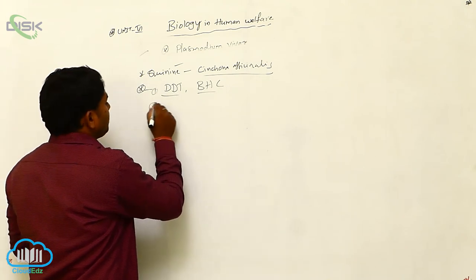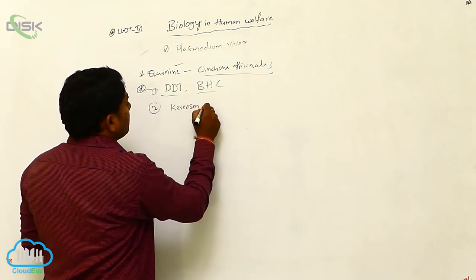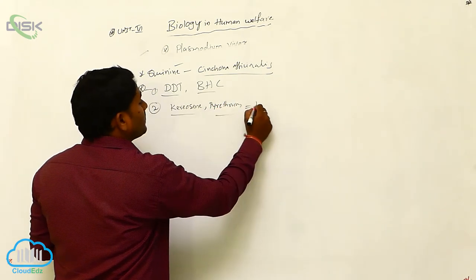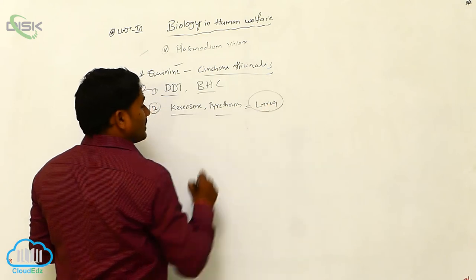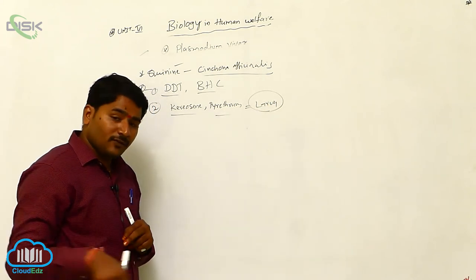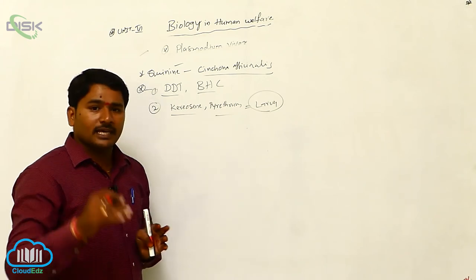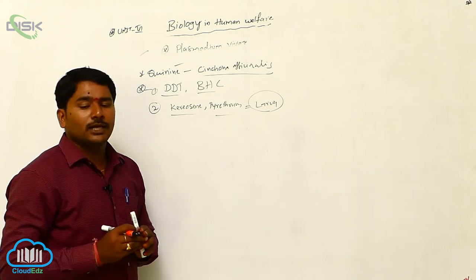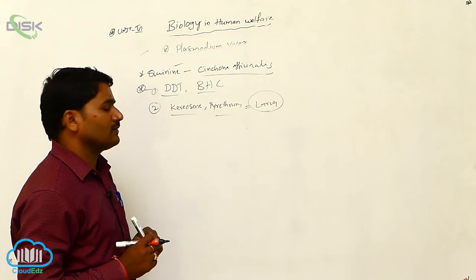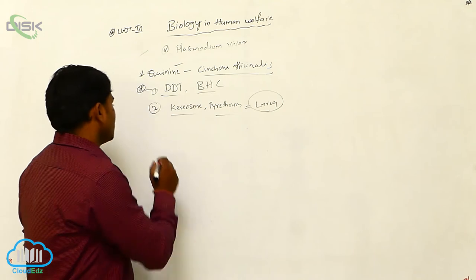Spraying of kerosene and pyrethrum will kill the larva. Whenever stagnated water is there, if we spray kerosene as well as pyrethrum, these will form a layer which prevents the oxygen supply. Due to the suffocation problem, the larval stages will die. By kerosene and pyrethrum, we can control larva. By spraying DDT and BHC, we can control adults.